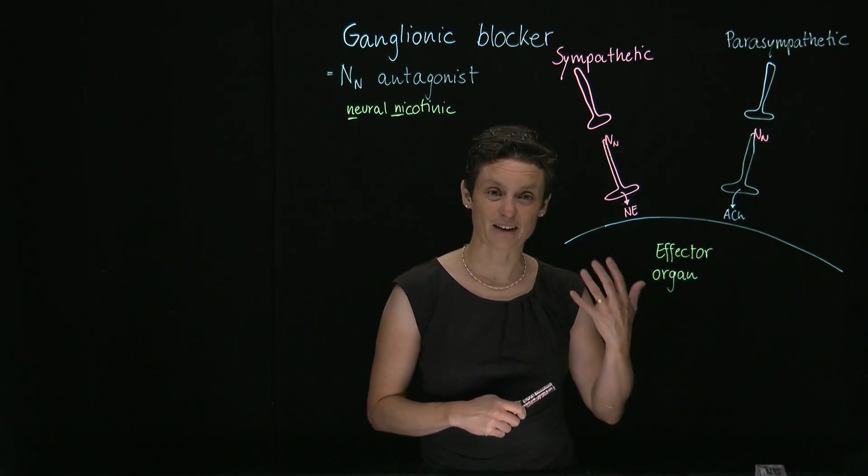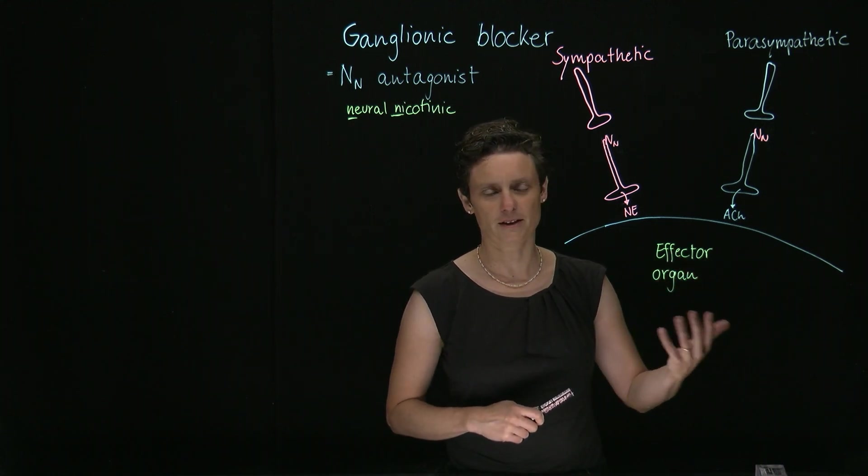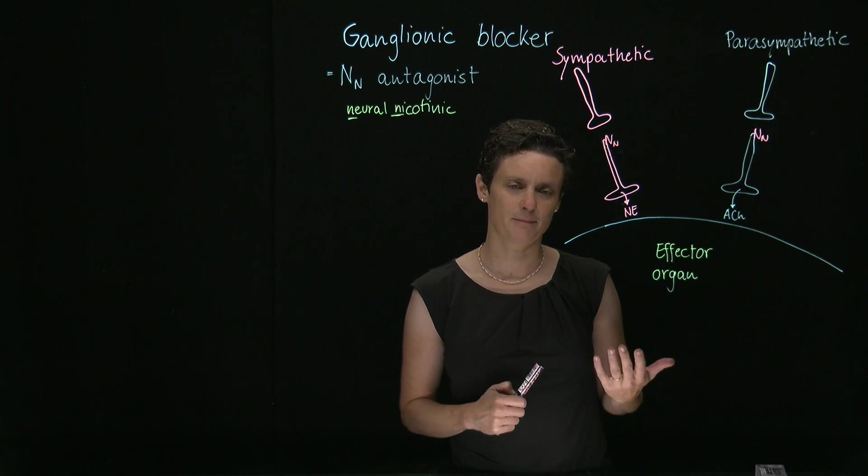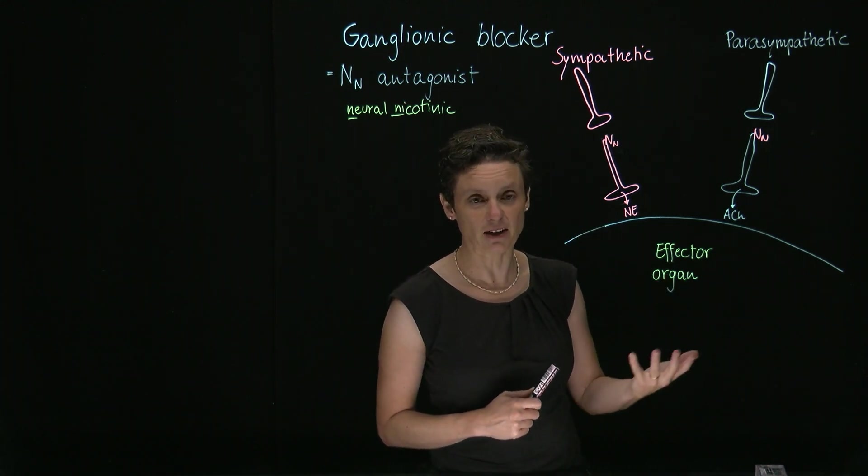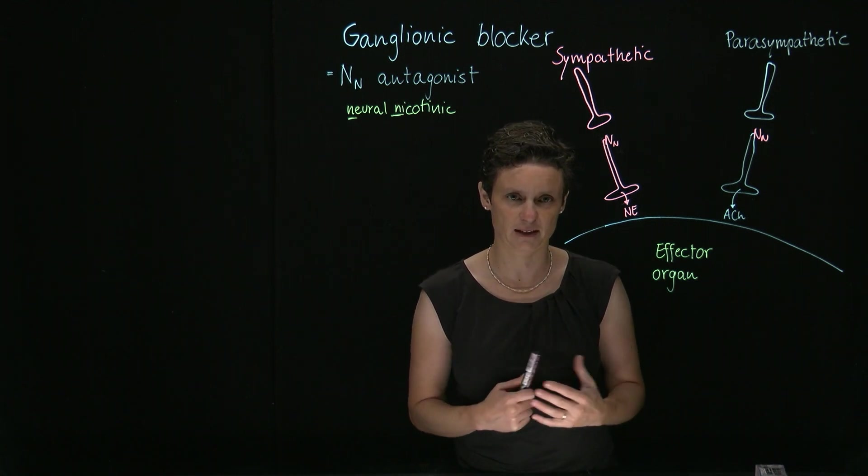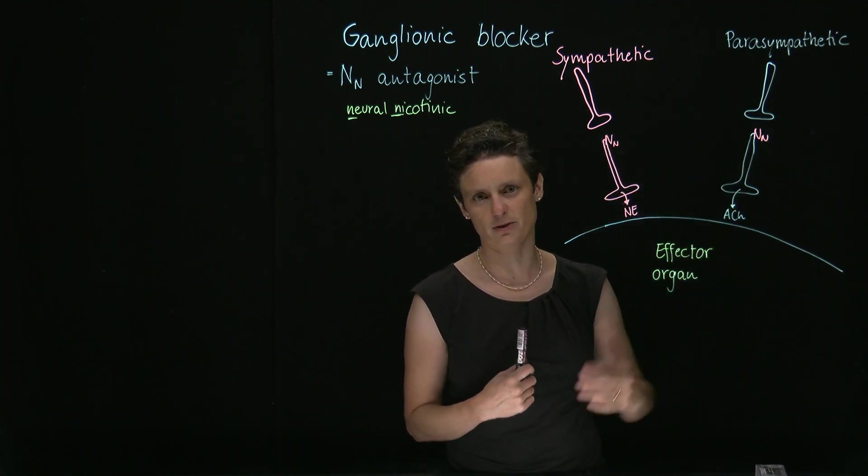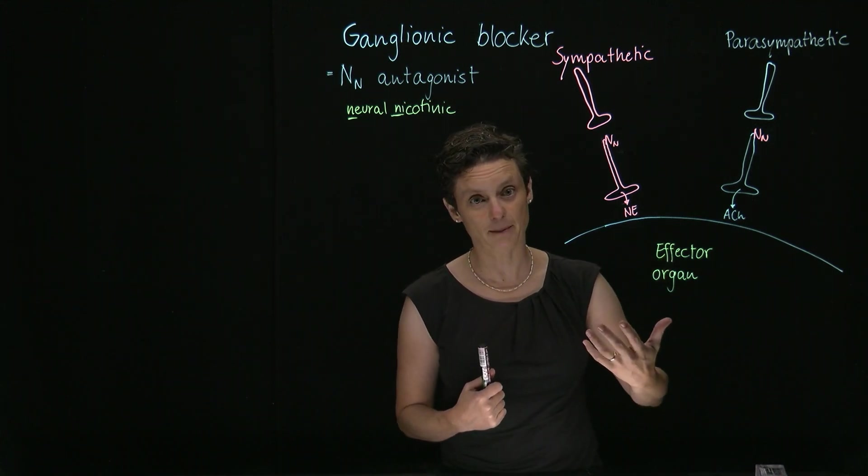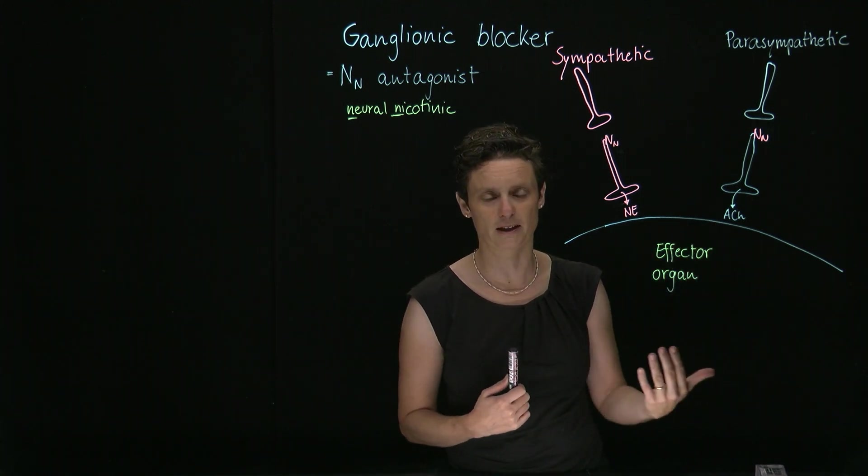If you want to understand the effects of a ganglionic blocker on all the different effector organs, we have to first think about what this blocker is going to do. It's an NN antagonist. An antagonist by itself doesn't have any effect. It has an efficacy of zero, but what it does is just block these receptors. So we really need to look at the tone. What is going to happen normally under physiological conditions, and what's going to happen if you block it?